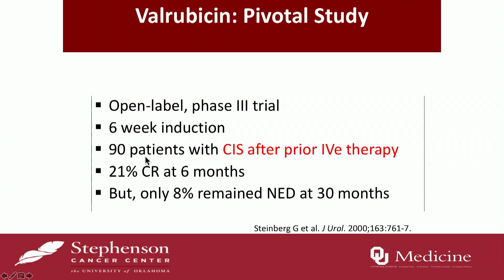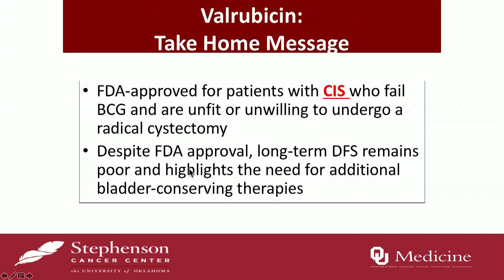The first option is valrubicin (Valstar), which is FDA approved. A phase three trial enrolled patients with CIS only who had failed prior intravesical therapy; they received a six-week induction of valrubicin. The six-month complete response rate was 21 percent, and at 30 months only 8 percent remained NED. Despite FDA approval, long-term disease-free survival is poor, underscoring the need for better bladder-conserving therapies.